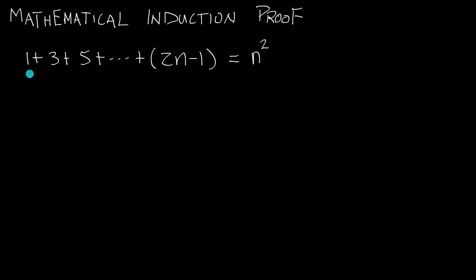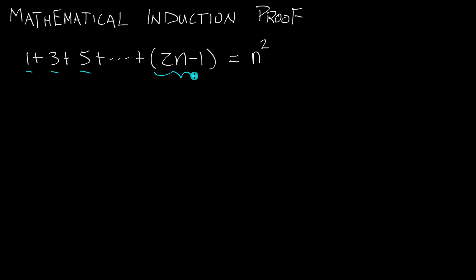So what exactly does this notation on the left hand side mean? If you think about each of these terms — the 1, the 3, the 5 — each of those are all some 2n minus 1 term.